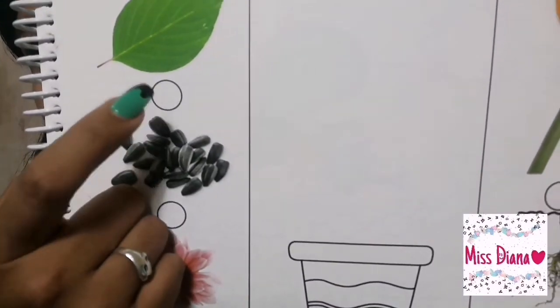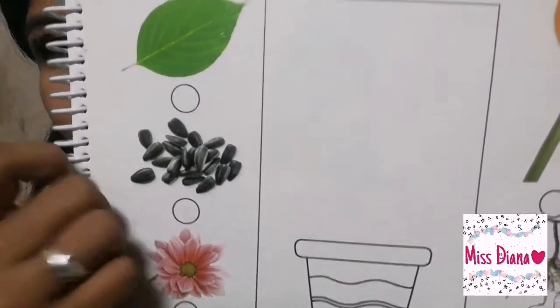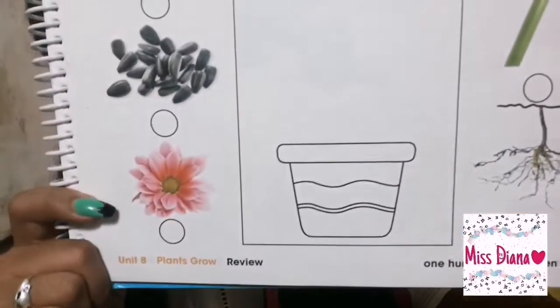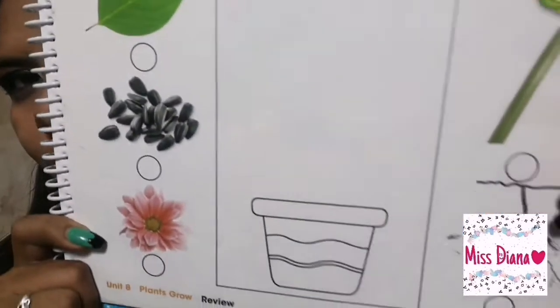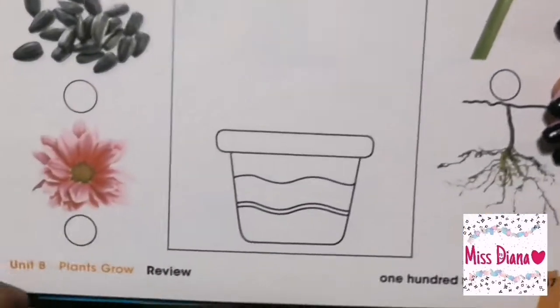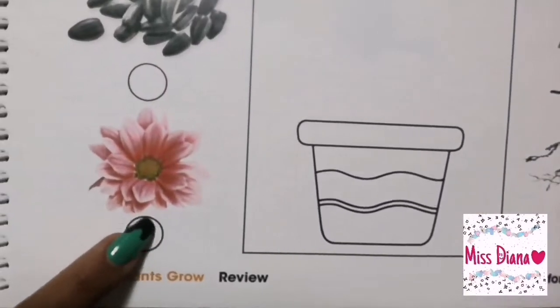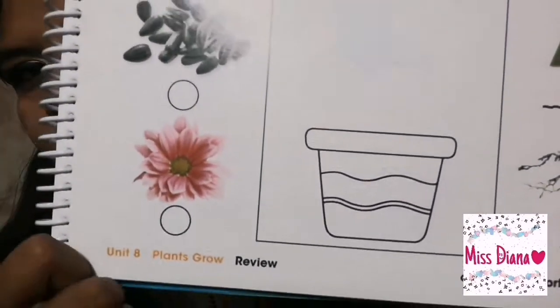Color the circle yellow. Grab your color red and find the flower. Which one is a flower? Excellent! Color red.